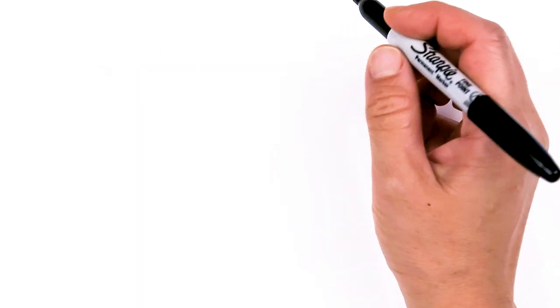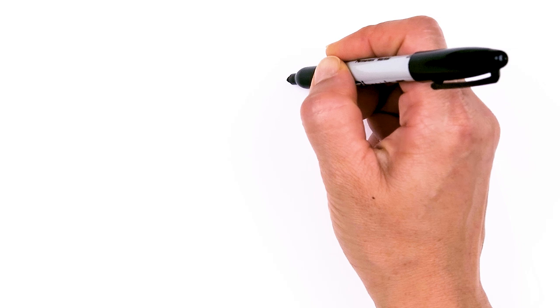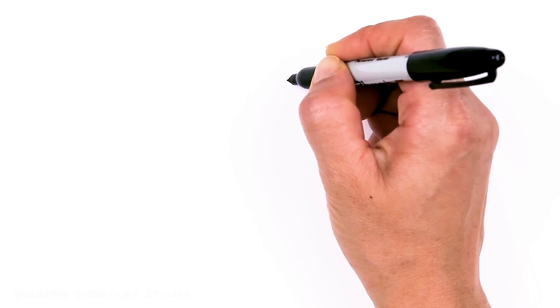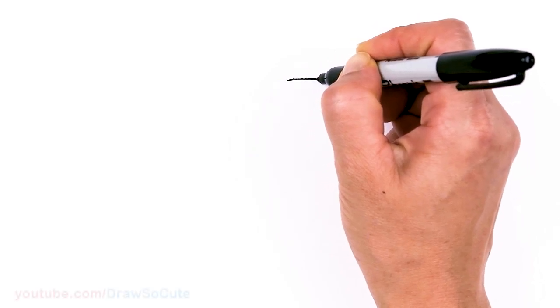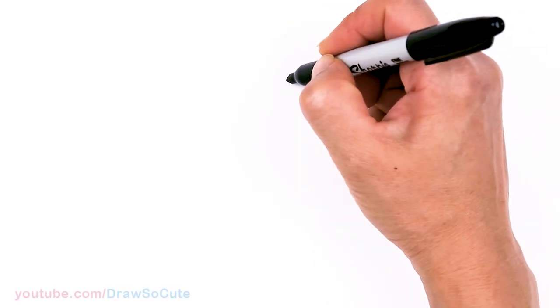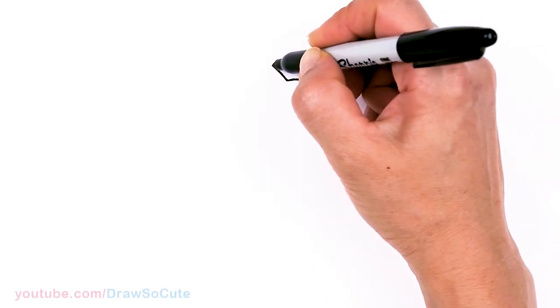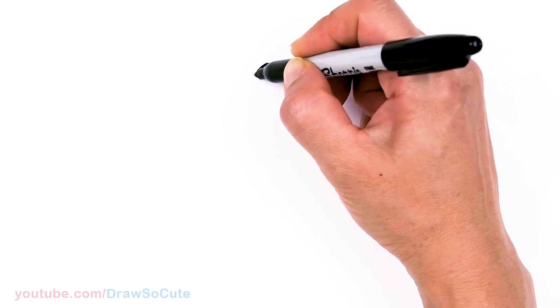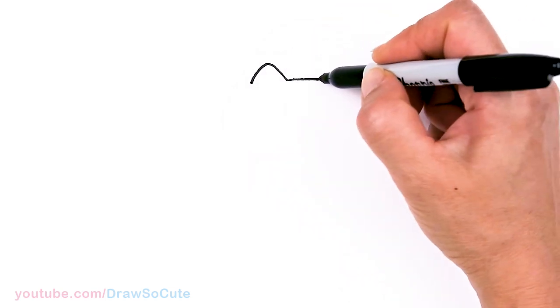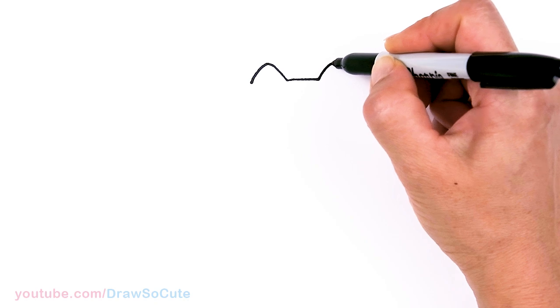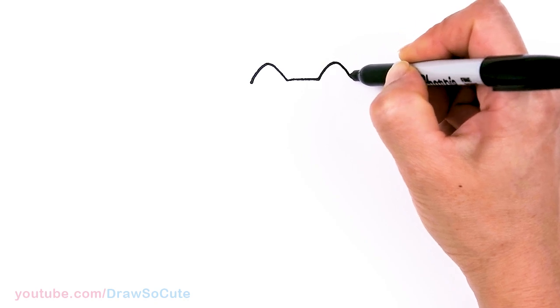To draw this cute Pusheen, let's first start by drawing a curve for the center of her head. I'm going to come right here and just draw a soft curve right there. And then from there I'm going to go up for her ears, round off the tip and come right back down. Same thing on this side. Go up and come right back down.